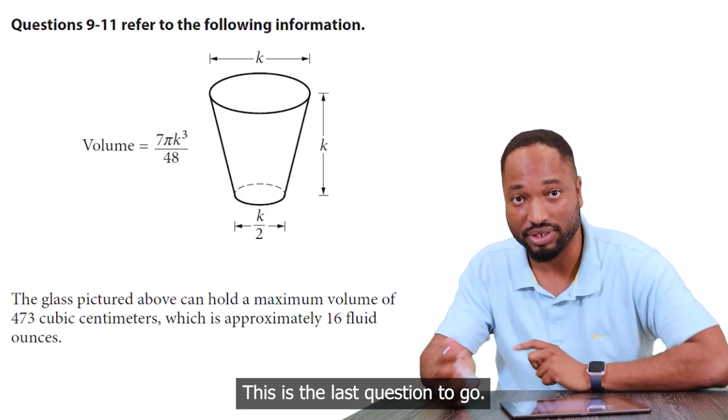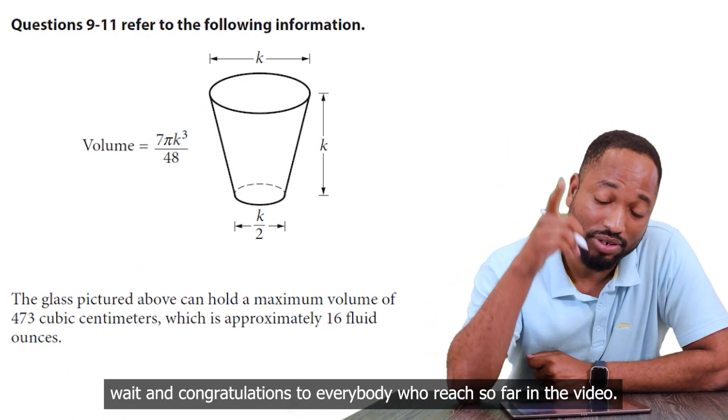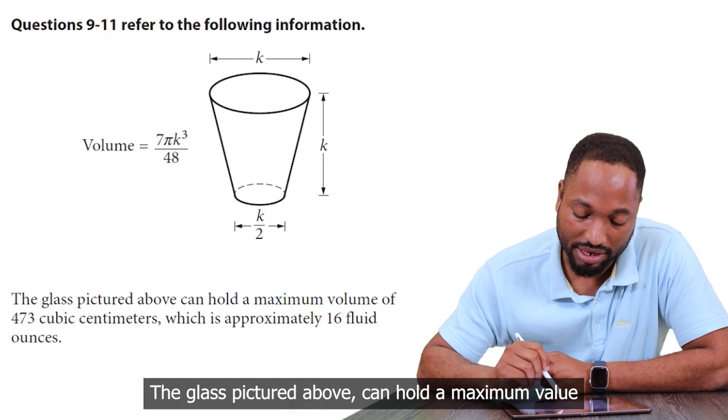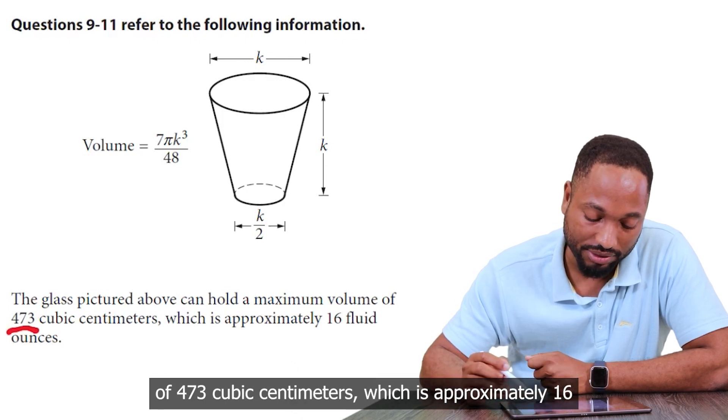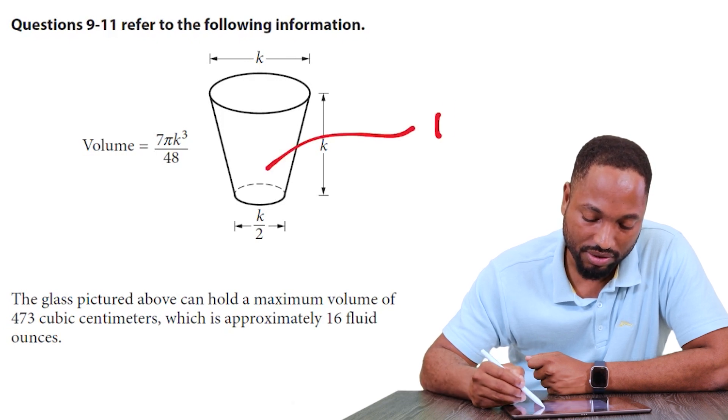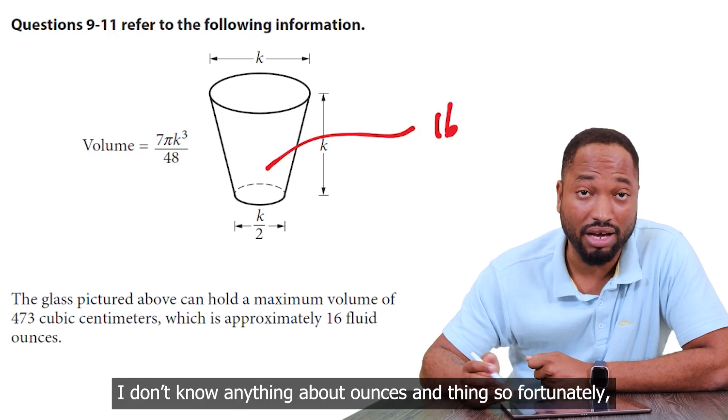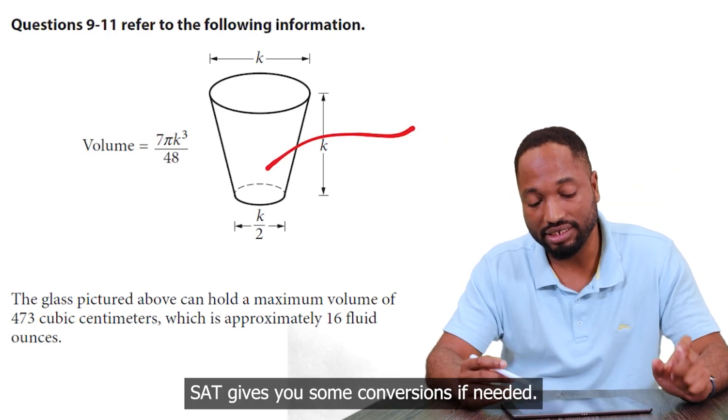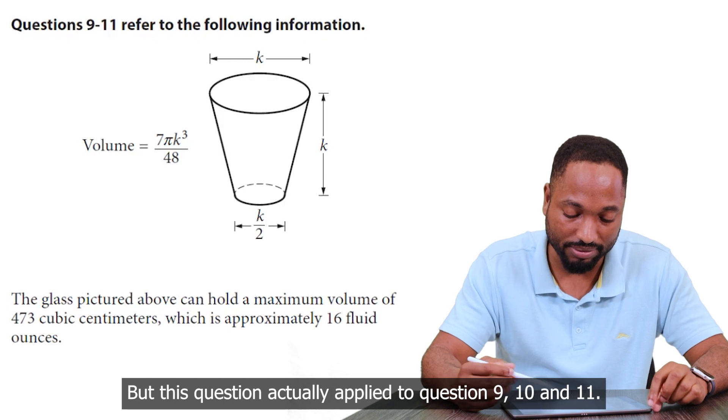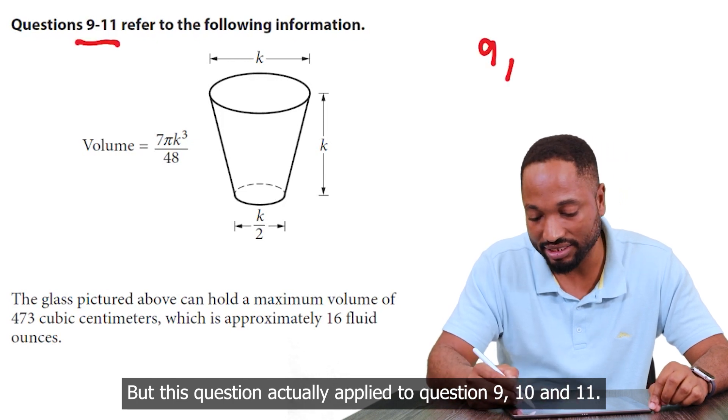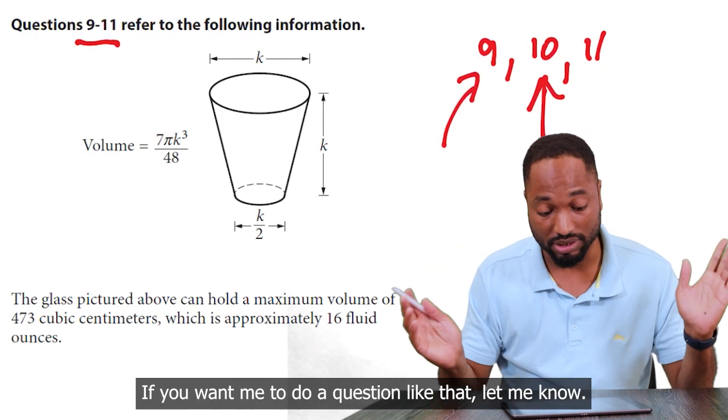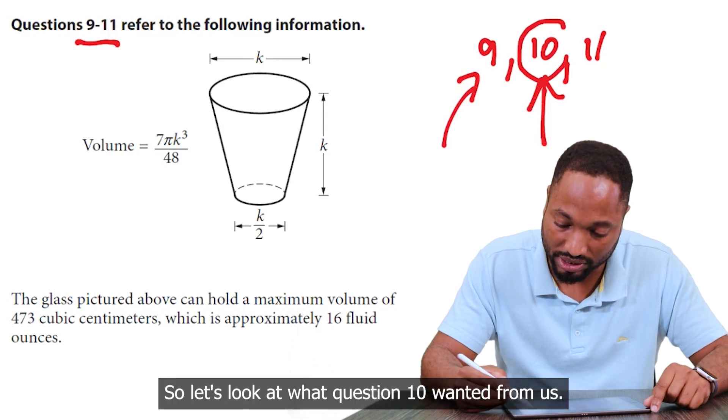Look at this question. This is the last question to go. And congratulations to everybody who reached so far in the video. Normally people bust out really. Fortunately, the glass pictured above can hold a maximum value of 473 cubic centimeters, which is approximately 16 fluid ounces. I don't know nothing about ounces and things. So fortunately, SAT gives you some conversions if needed, right? But this question actually applied to question 9, 10, and 11. We'll really look at question 10. Question 9 was asking something about volume. If you want me to do a question like that, let me know. So let's look at what question 10 wanted from us.